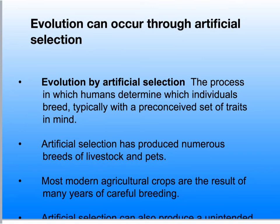Evolution can also occur through an artificial selection process. Artificial selection, natural selection, and a random process are the three primary ways that evolution occurs. Humans have long influenced evolution by breeding plants and animals for desirable traits to feed our families. All breeds of domesticated dogs at one point belonged to the same species, the gray wolf Canis lupus, yet dogs exist in a huge variety of shapes and sizes ranging from tiny toy poodles to Siberian huskies. Most modern agricultural crops are the result of many years of very careful breeding — pretty much all the food that you eat has been artificially selected for.